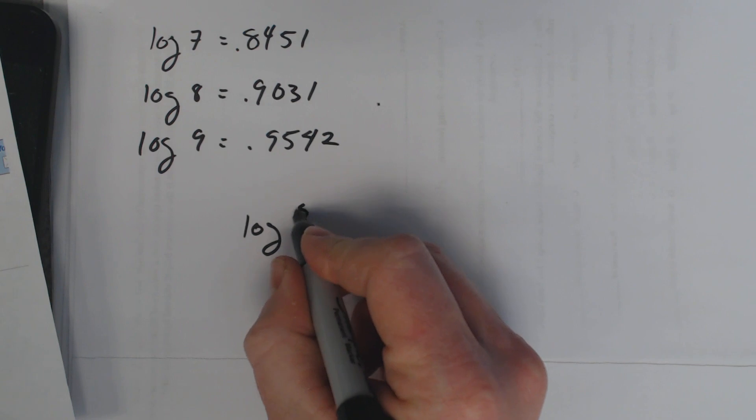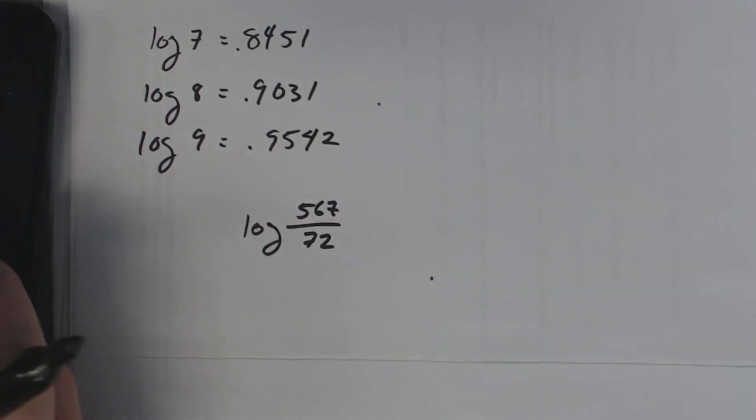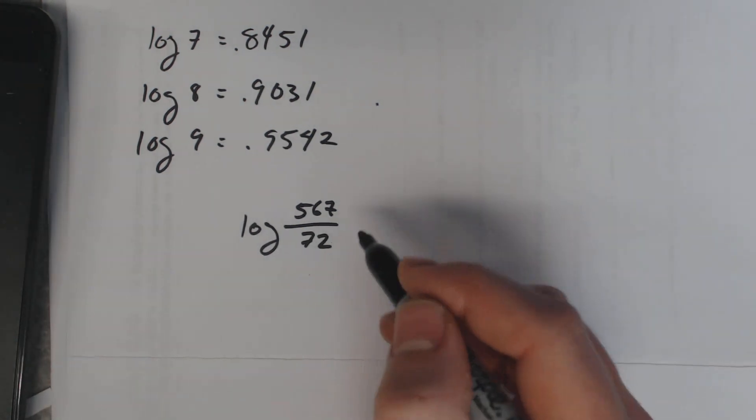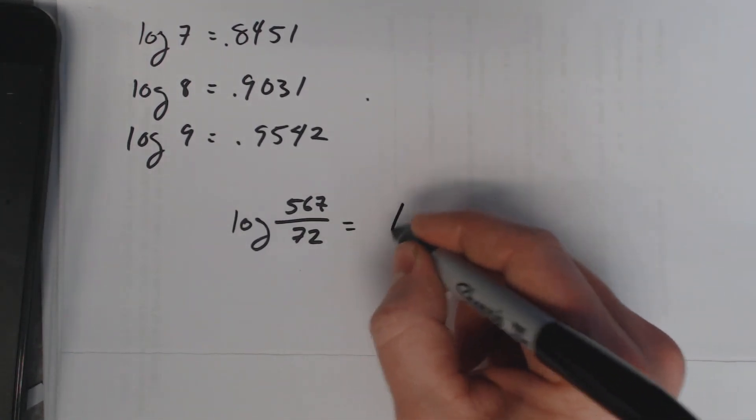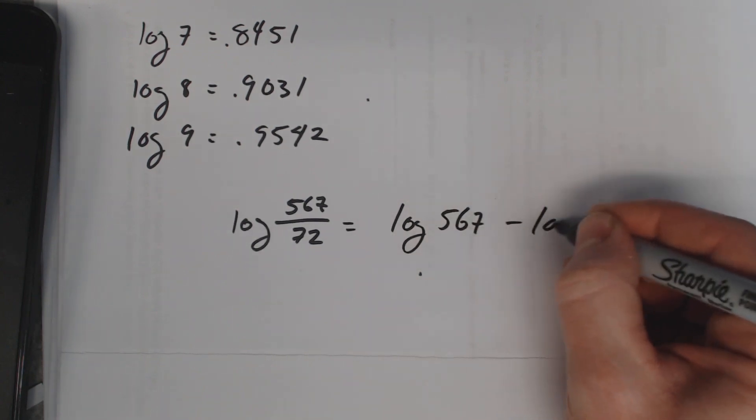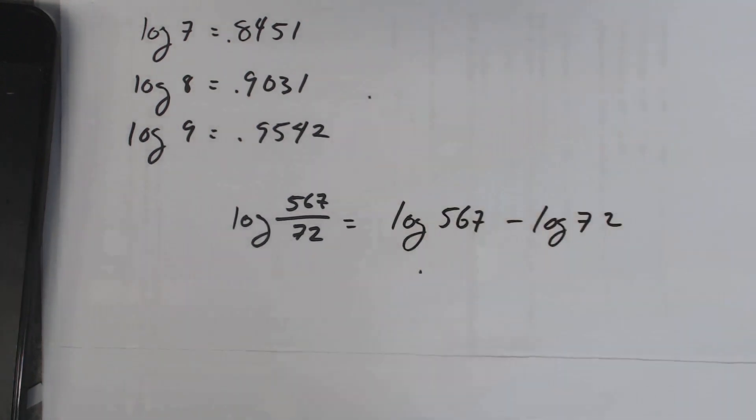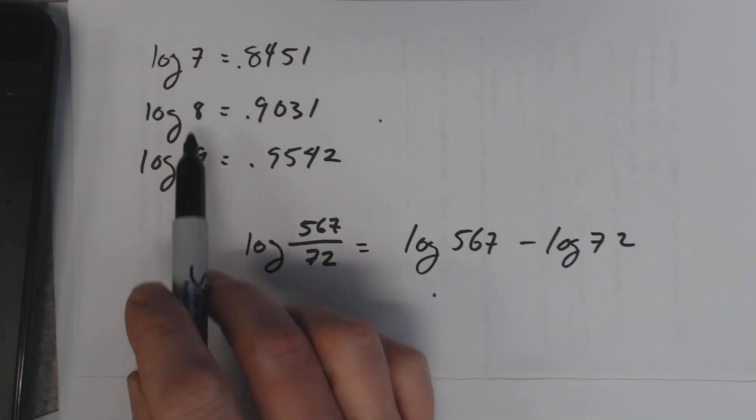There's a property that says that if you have division then it's subtraction. You can split it up using subtraction so that's the same thing as saying log 567 minus log 72. Now 567, I have to use 7, 8, or 9 somehow to get 567.